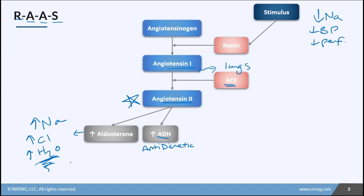If we retain water, blood volume goes up and that increases our blood pressure. Third, we're going to see peripheral vasoconstriction, meaning the blood vessels out in our body — like in the extremities — are going to constrict. That's going to increase the pressure and bring more blood back to the kidneys and back to the heart.